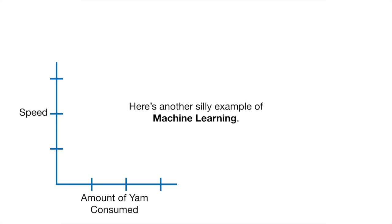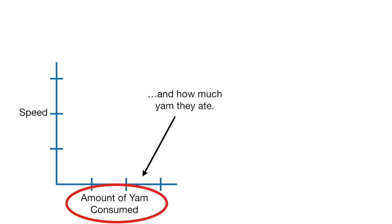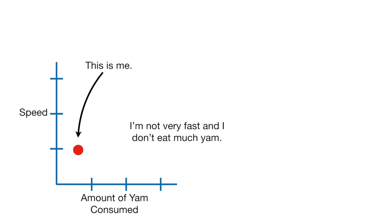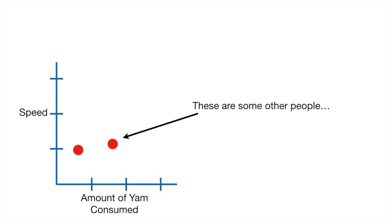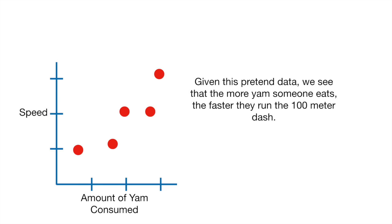Here's another silly example of machine learning. Imagine we measured how quickly someone could run 100 meters and how much yam they ate. I'm not very fast and I don't eat much yam. These are some other people. And this is Usain Bolt — Usain Bolt is very fast and he eats a lot of yam. Given this pretend data, we see that the more yam someone eats, the faster they run the 100 meter dash.